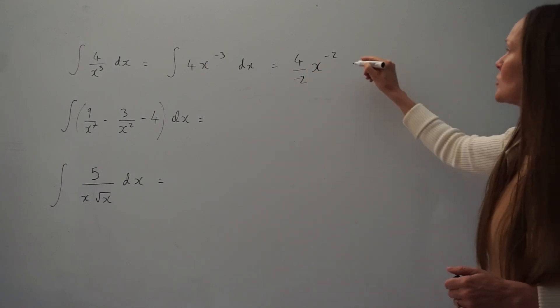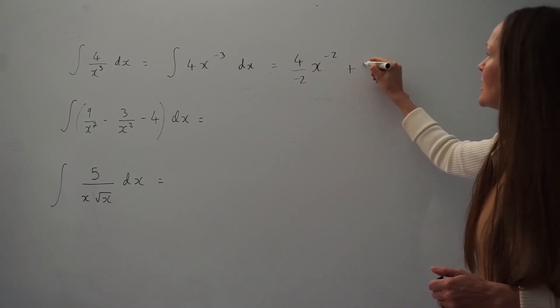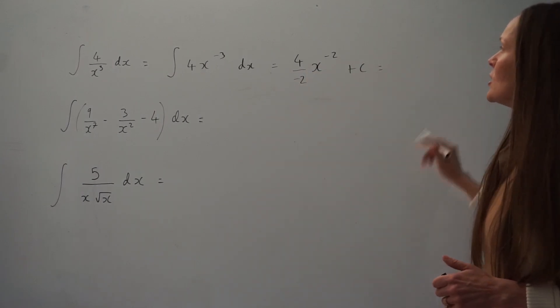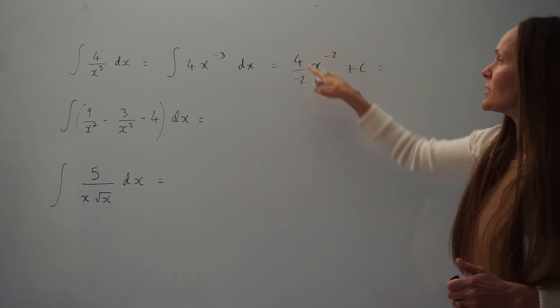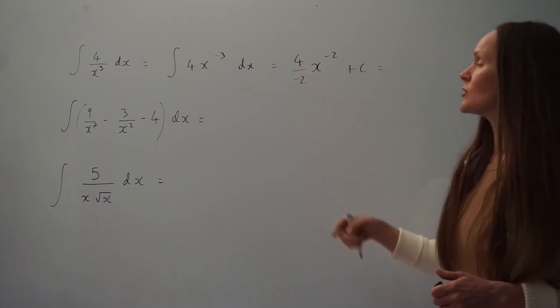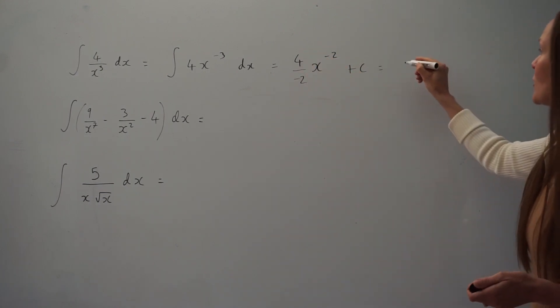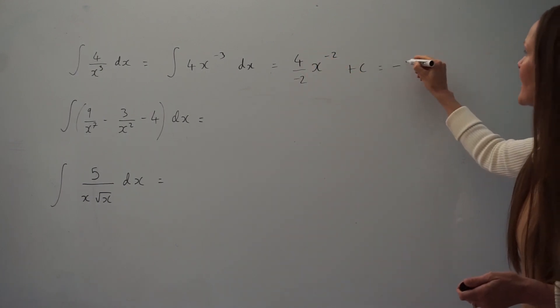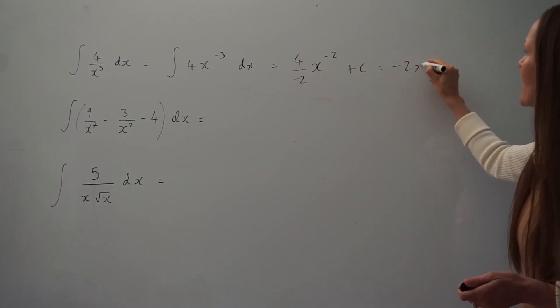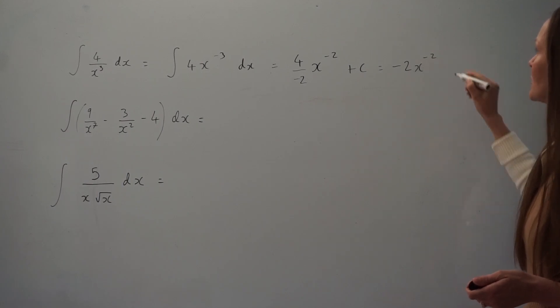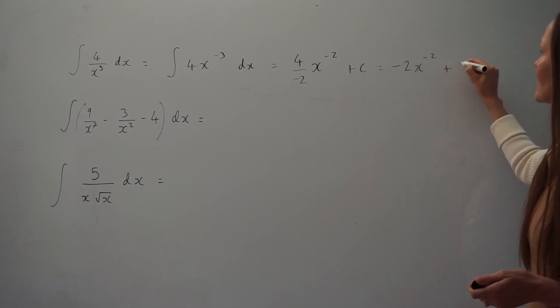Not forgetting to add your constant c and then simplify. So 4 divided by negative 2 is negative 2. The final answer is negative 2x raised to the power of negative 2 plus c.